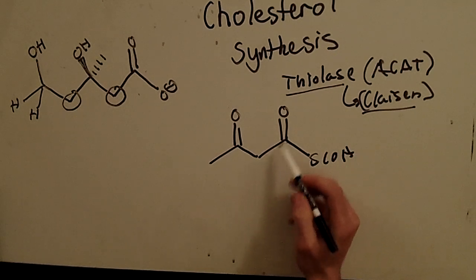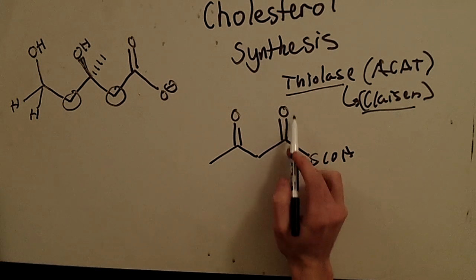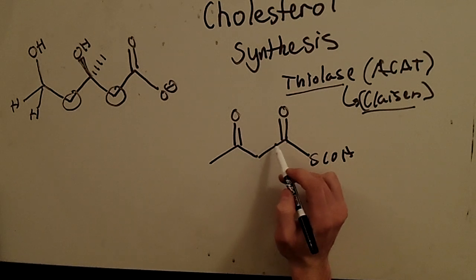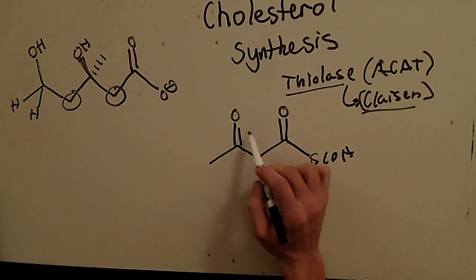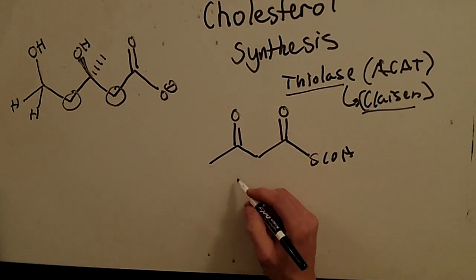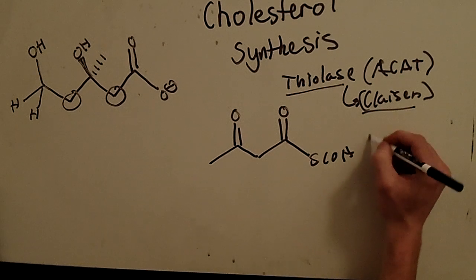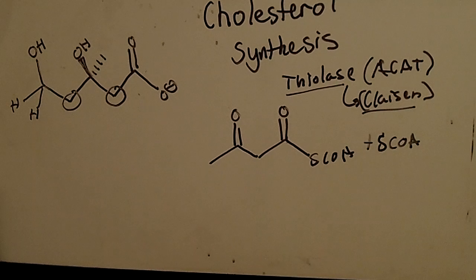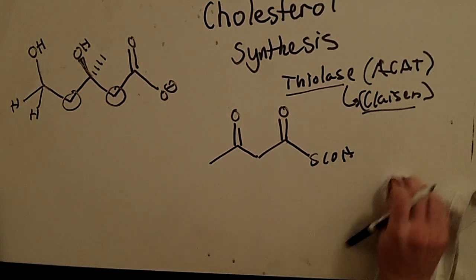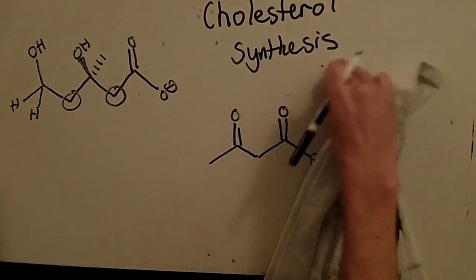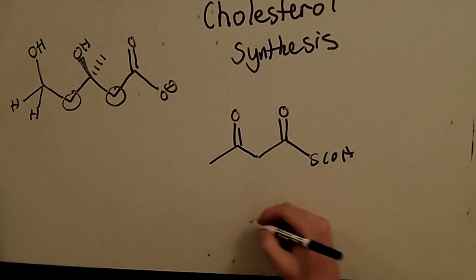The enolate collapsed, reformed the carbonyl. The electrons from the pi system came in and attacked the carbonyl, forming the tetrahedral intermediate, which collapsed, reforms the carbonyl, and that acetyl-CoA is now gone. So we have plus S-CoA remaining. That's the end of the thiolase step and the Claisen condensation — we've condensed two acetyl-CoAs. Now we move on to the aldol reaction.